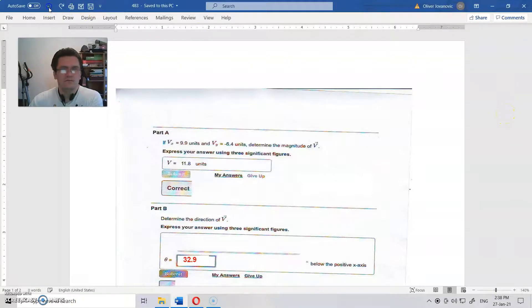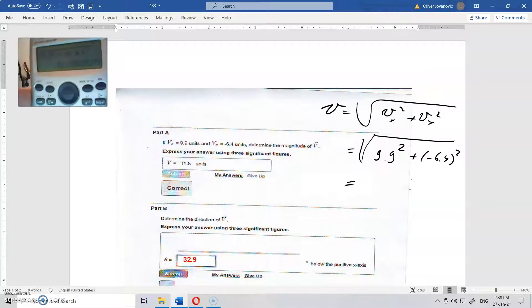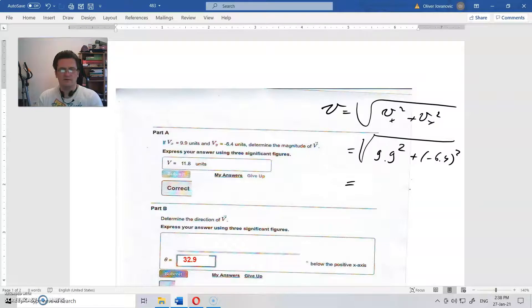So magnitude V is square root of Vx squared plus Vy squared. That is equal to square root of 9.9 squared plus minus 6.4 squared. That is 11.788 and so on. And if the answer is needed for three significant figures, that is 11.8, same units.